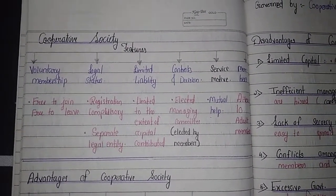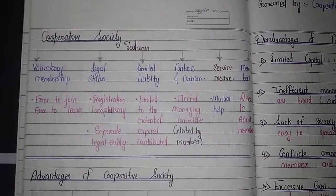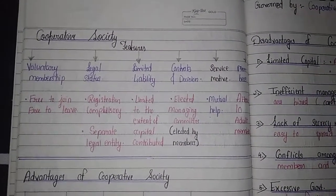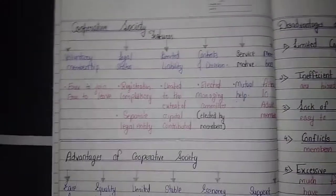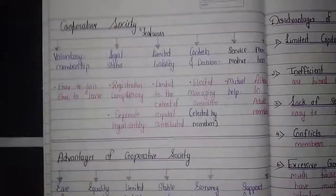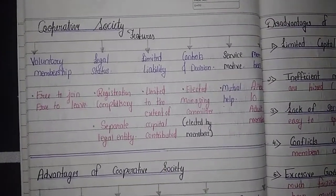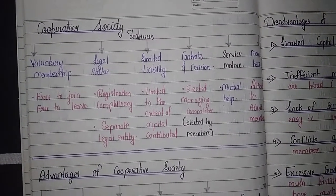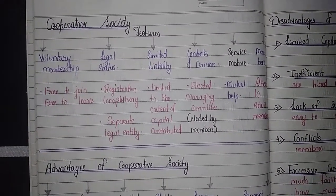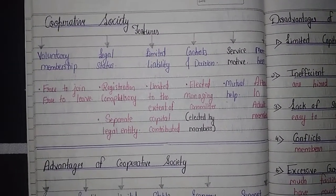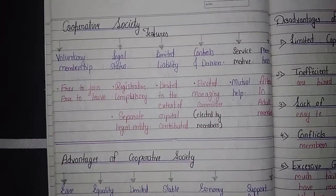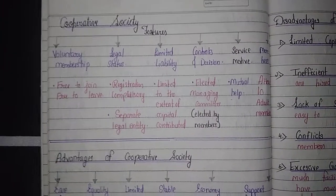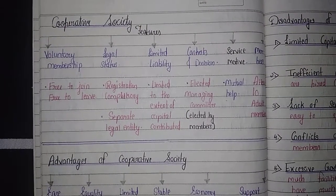The fourth feature is controls and decision-making — the control remains with the elected managing committee. The committee is formed by selecting some members from all members. The fifth feature is service motive, which means mutual help — whatever members are connected to the society, they help each other.